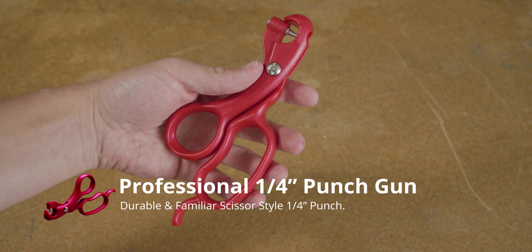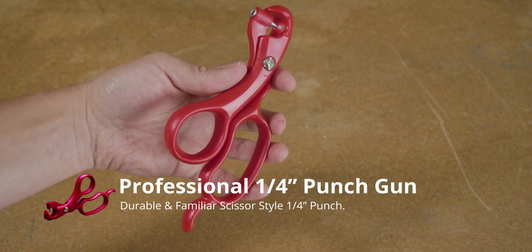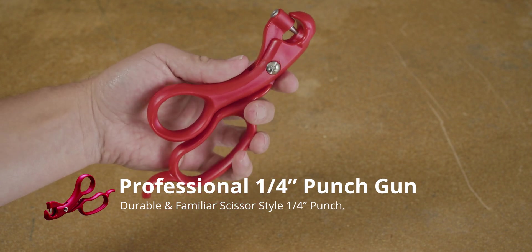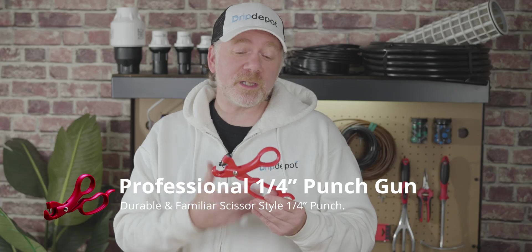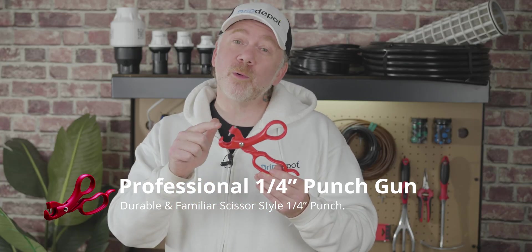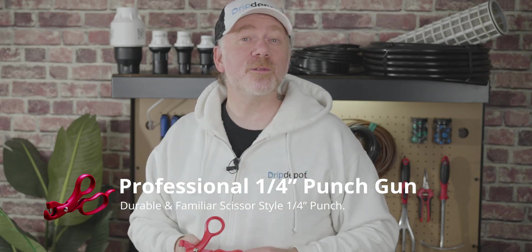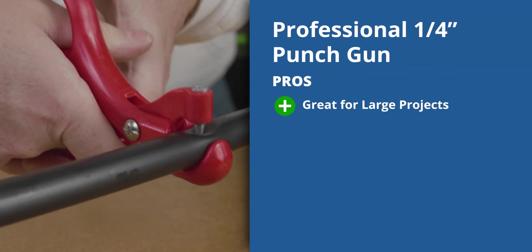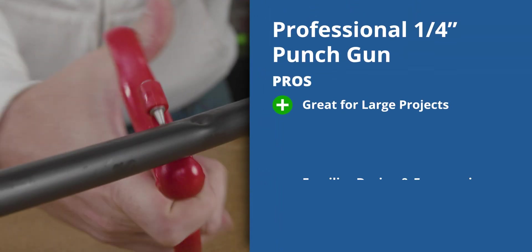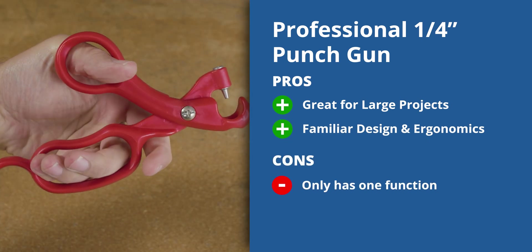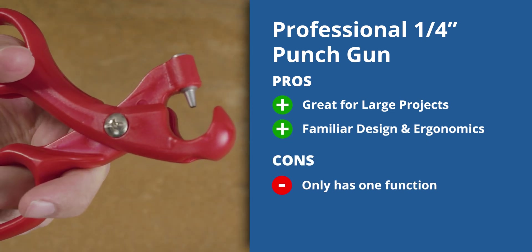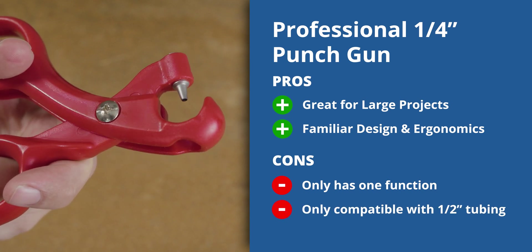The Orbit one-quarter inch punch gun is designed specifically to make punching holes in one-half inch tubing fast, easy, gentle on the hands, and gentle on the wallet. With its familiar scissor form and a cradle to hold the tubing, it makes punching holes very easy. You'll have no problem punching dozens of holes at a time with this punch gun, but it is only a single function punch, so any other tools you might need will have to be purchased separately. And it's limited to punching one-half inch poly tubing sizes.